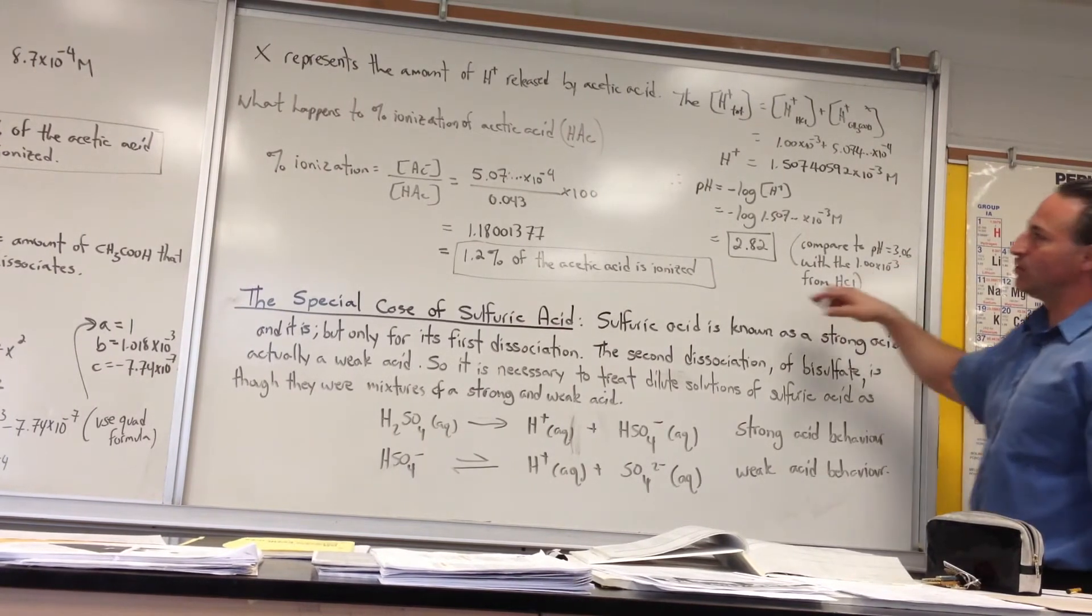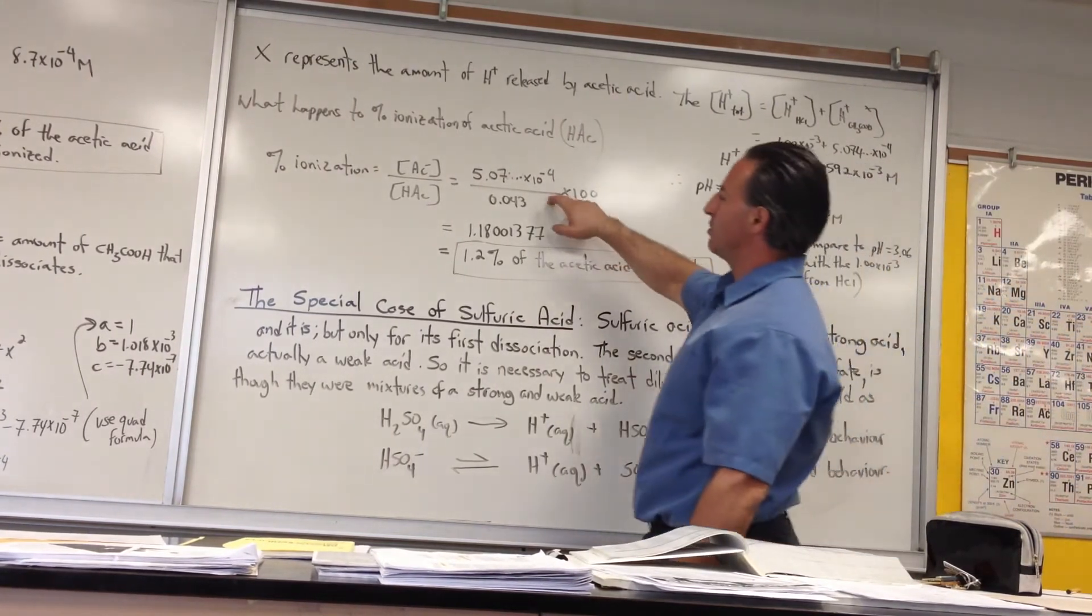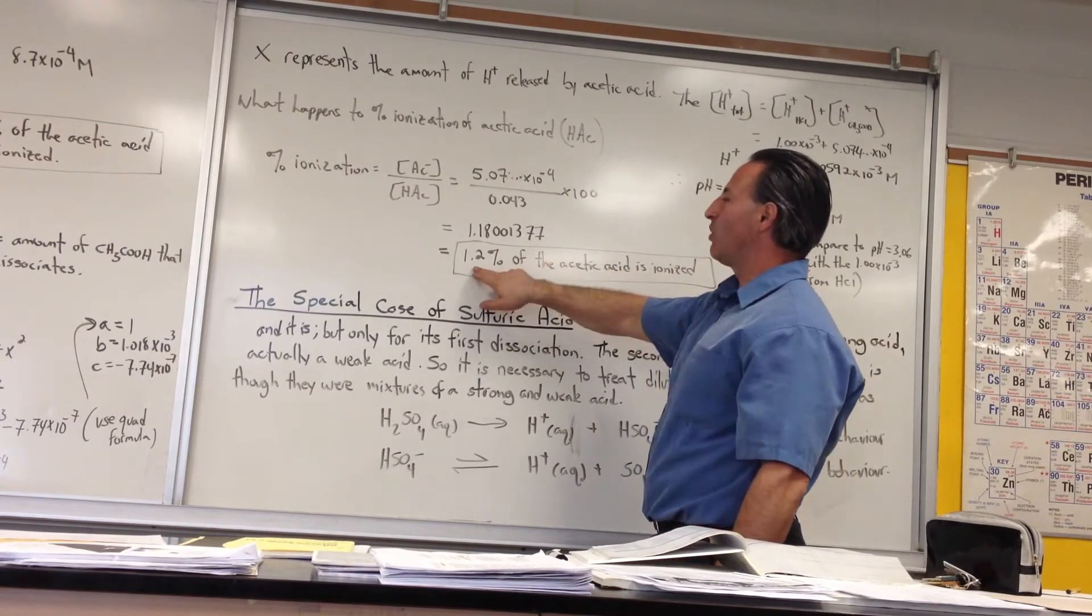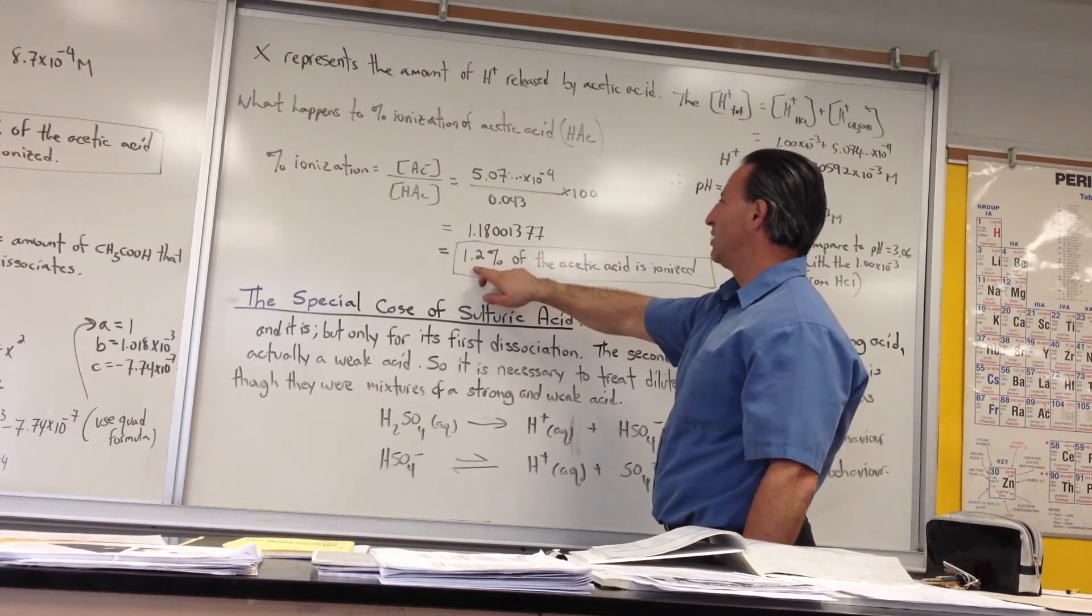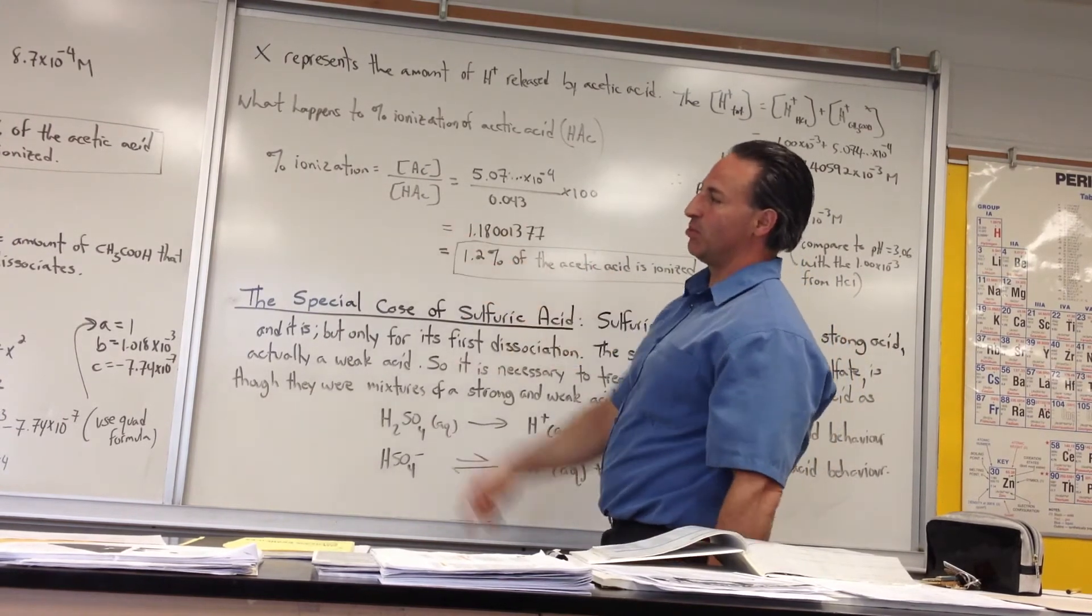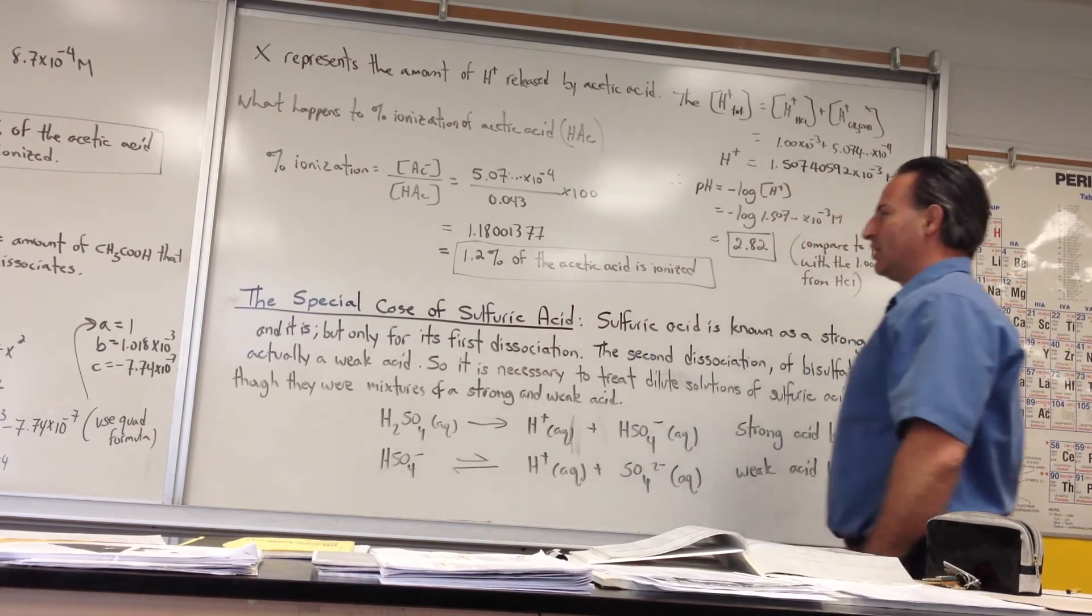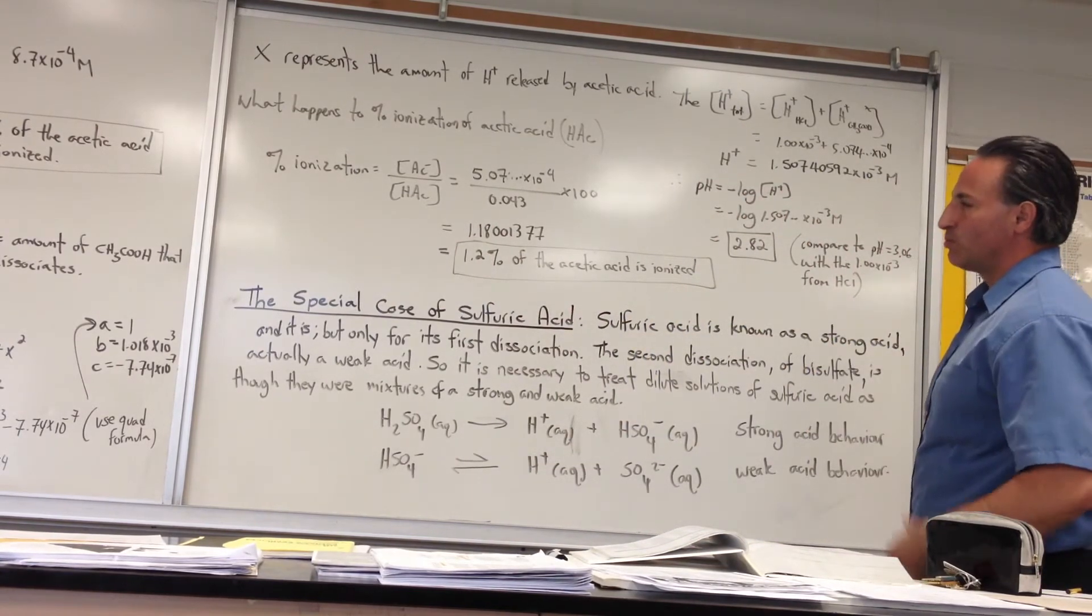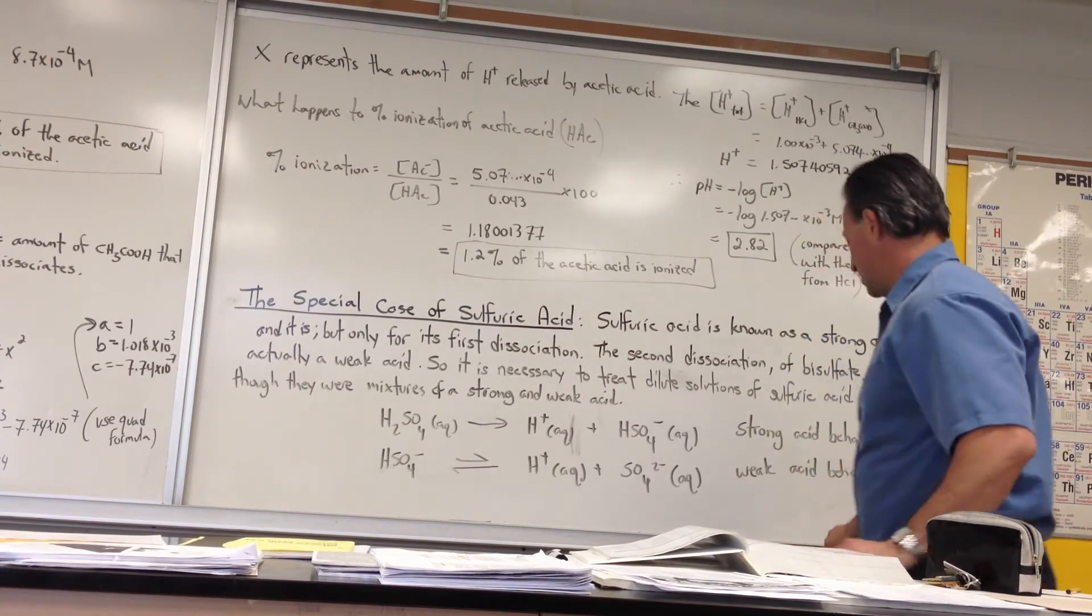The proof of that is when we do the percent ionization calculation, we find that the acid now is only 1.2% ionized. Why? Because the equilibrium has been pushed to the left by the presence of H⁺ from another source, which brings us to the next type of calculation.